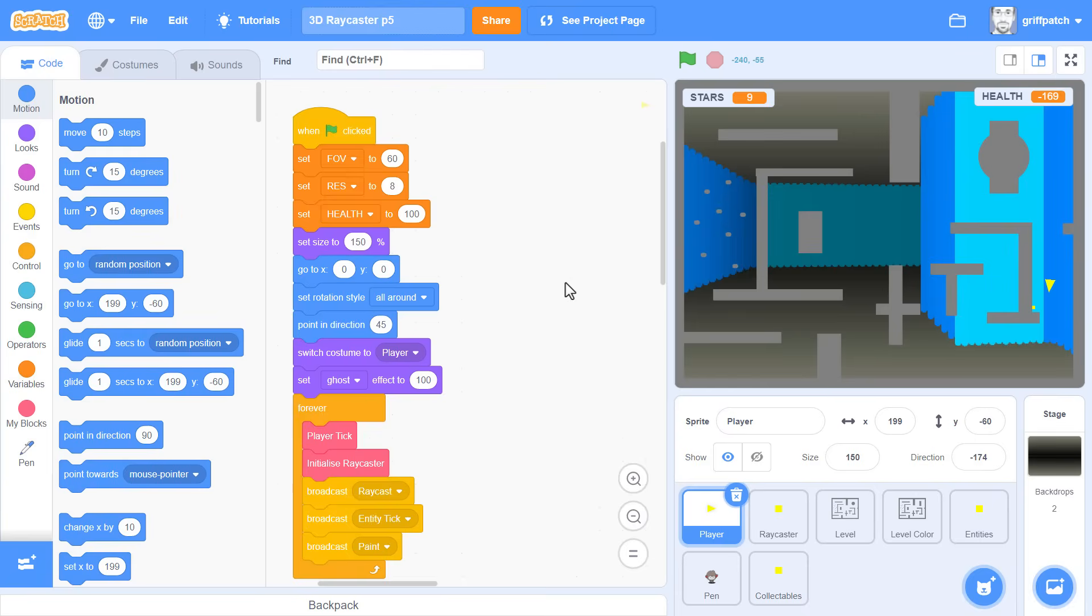Right, so load up our raycasting projects. It doesn't matter if you're still at episode 2 or you've made it all the way through to episode 5. You can add in the following script enhancements at any point. So, let's begin by saving this project as a fresh copy. For me that is episode 6.